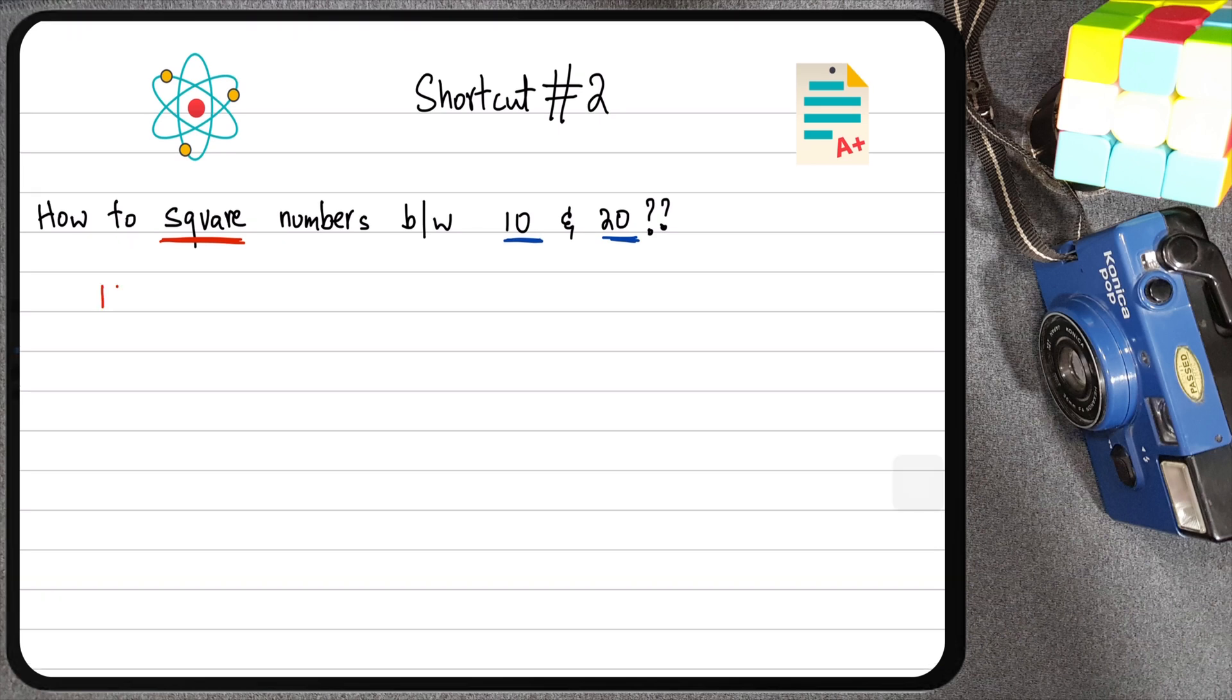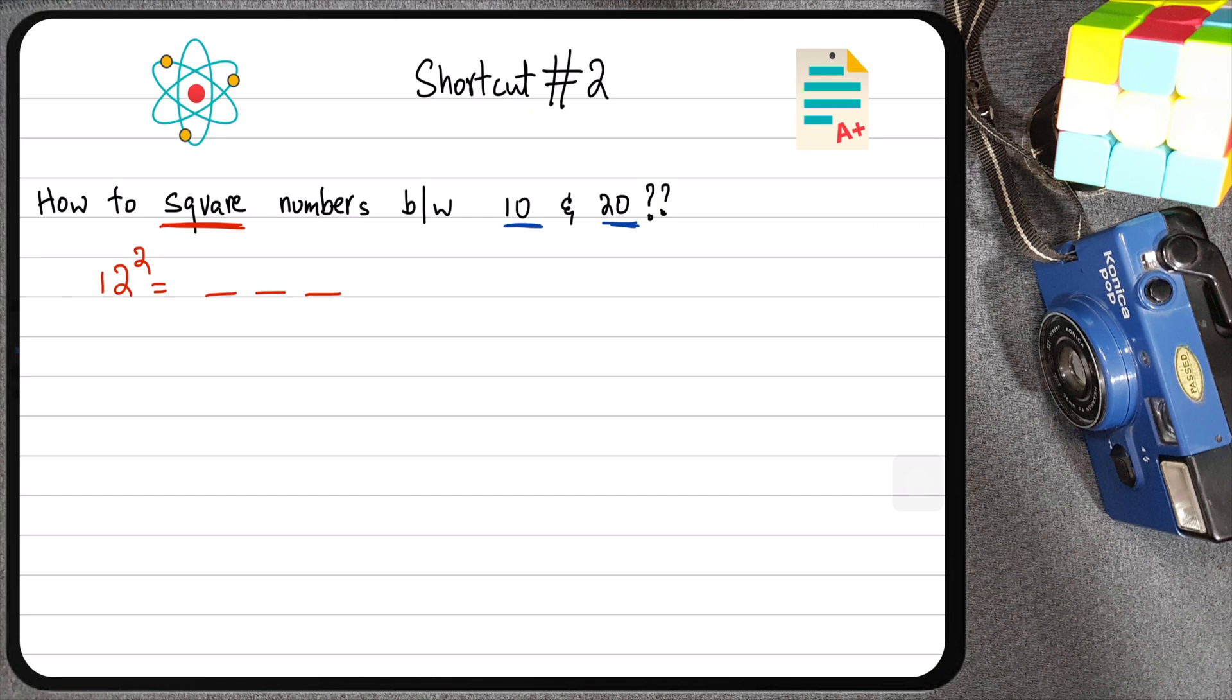So here we go. Suppose you want to find out what the square of 12 is equal to. Now, the square of 12 is going to be a three-digit answer. In fact, all the squares from 10 to 20 are going to be three-digit values. So for the first two digits, here's what I want you to do. I want you to look at the original number, which is 12, and then focus on the last number, which is 2. So I want you to take 12 and add the last digit. 12 plus 2 is equal to 14. So now we have our first two digits, which are 14.